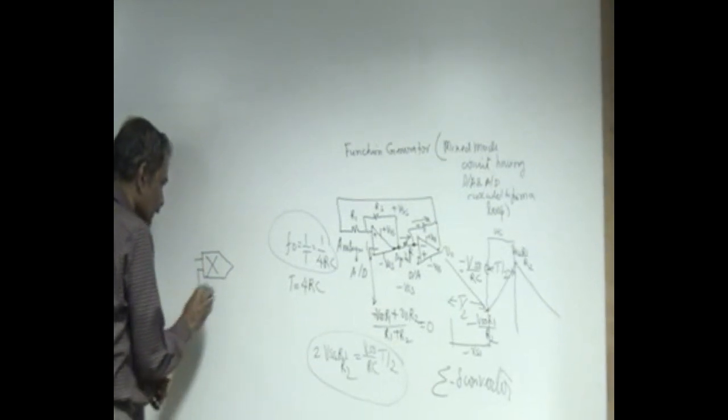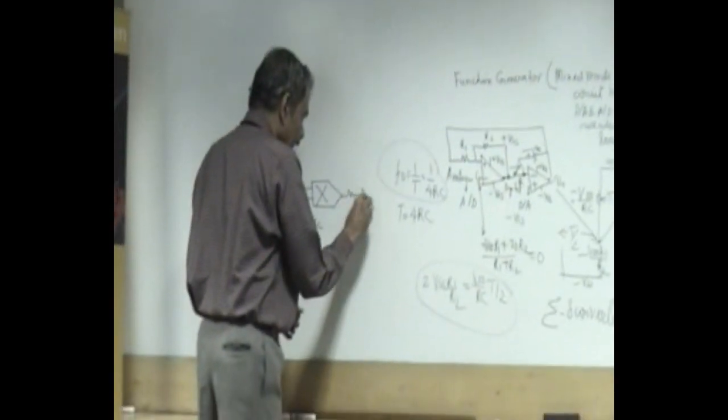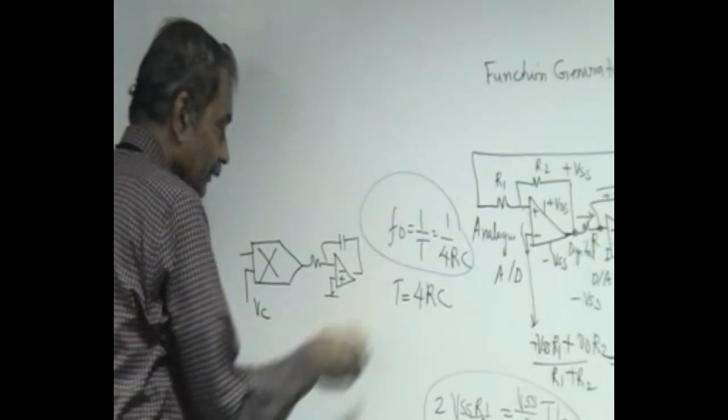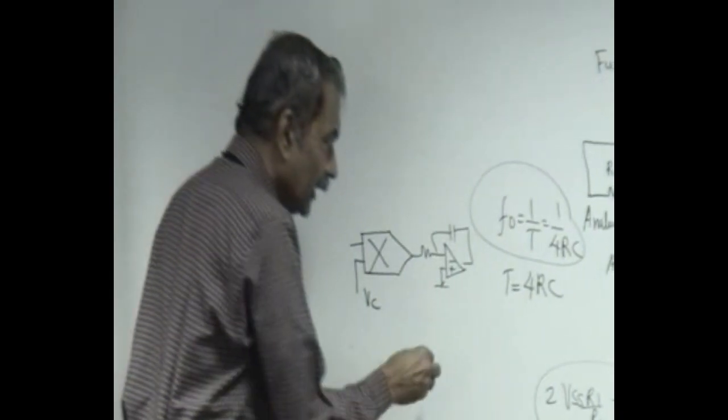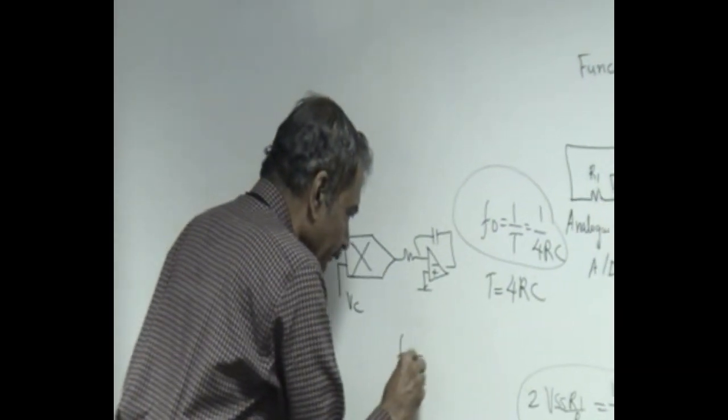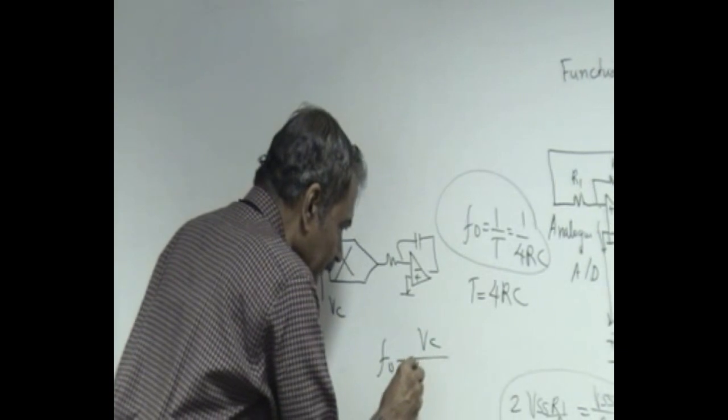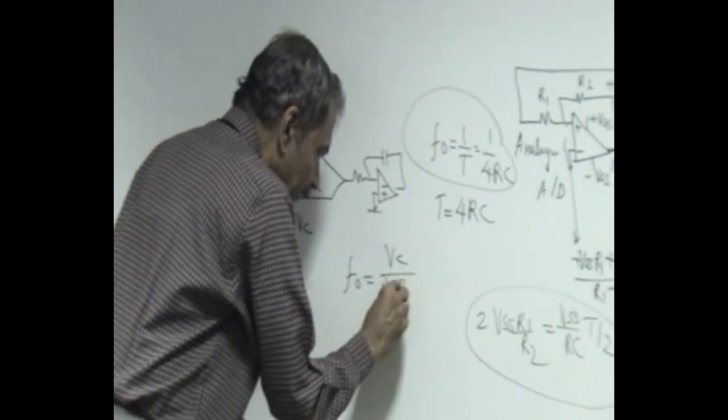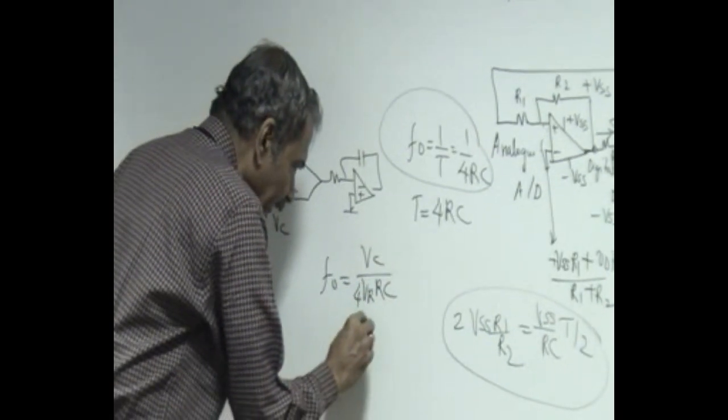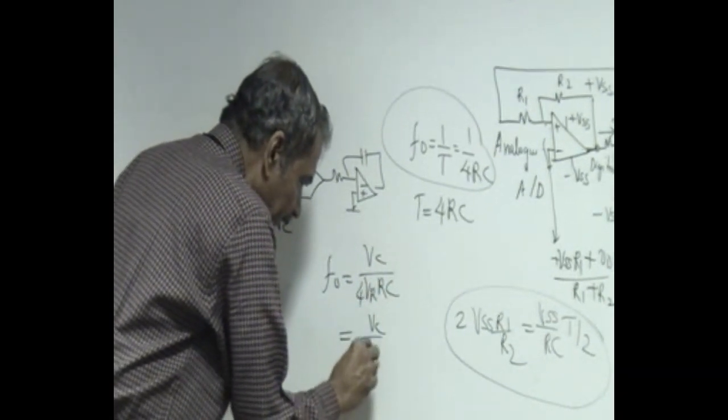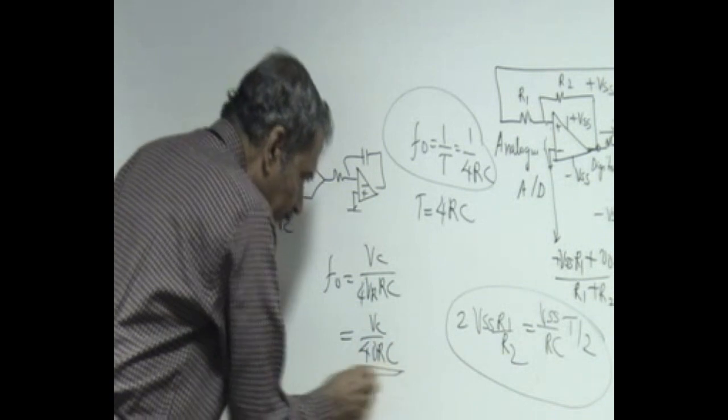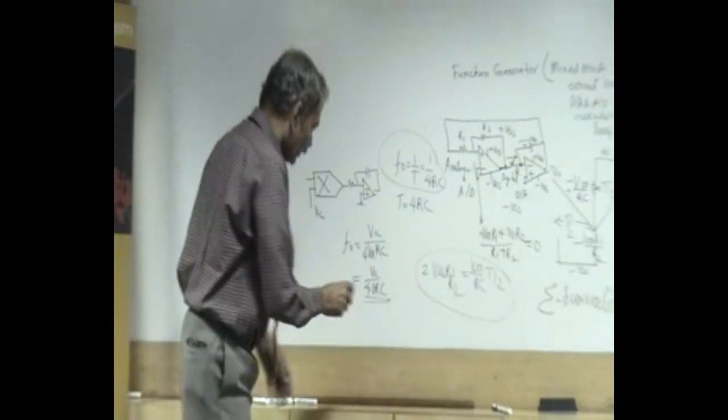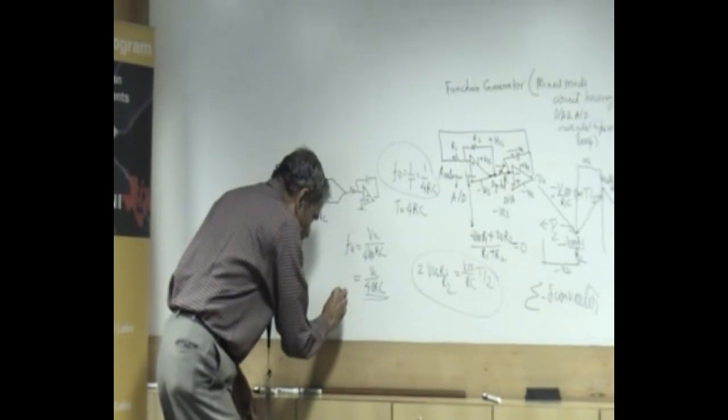It is also called a voltage control oscillator if you convert it by replacing this integrator with a multiplier integrator combination that we did earlier in self tuning filter. If you use this as VC and replace the integrator using this law, then frequency F naught becomes VC by VR into 4 RS. If VR is 10, it is VC by 4 RS. This becomes a voltage control oscillator or it can be used as FM generator.